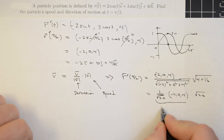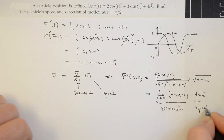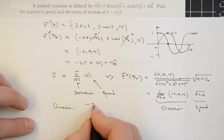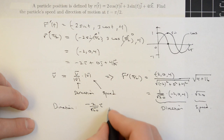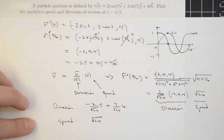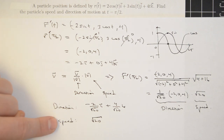The direction, which is a unit vector, is negative 2 over root 20 i plus 4 over root 20 k, and the particle's speed is square root of 20. There are no units in this problem, so we leave that aside, but in a physics problem we would include units with the speed while the direction would remain dimensionless.